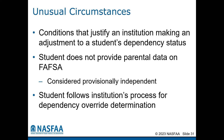Examples of a dependency override may include conditions in which the student is unable to contact a parent or where contact poses a risk to the student — for example, parental estrangement or abandonment, abuse, incarceration, or fear of an unsafe environment.